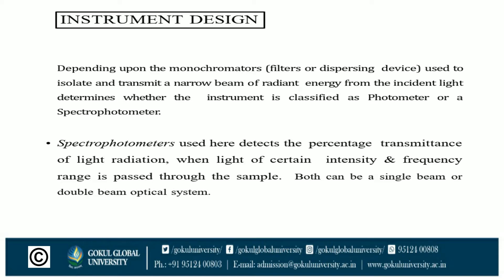Spectrophotometers detect the percentage transmittance of light radiation when light of certain intensity and frequency range is passed through the sample, as seen in our UV spectroscopy diagram. Both can be a single beam or a double beam optical system.